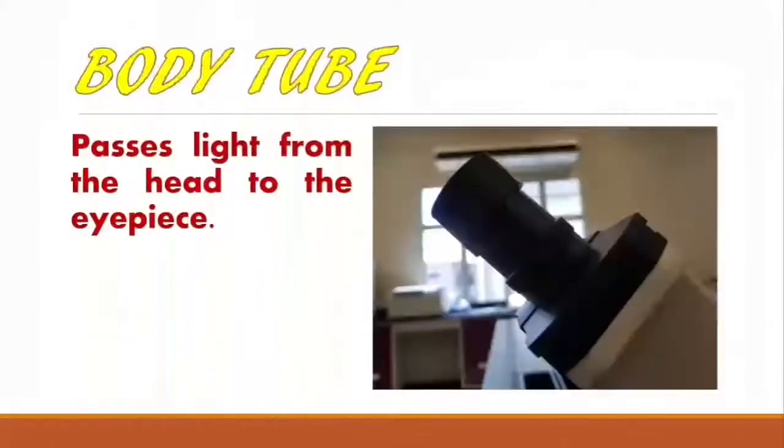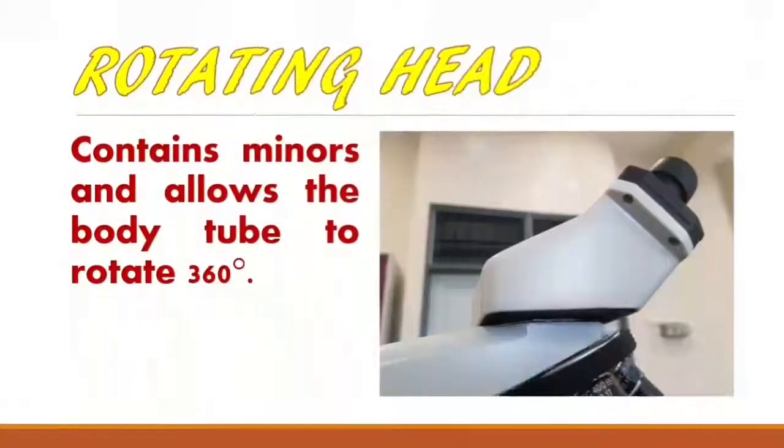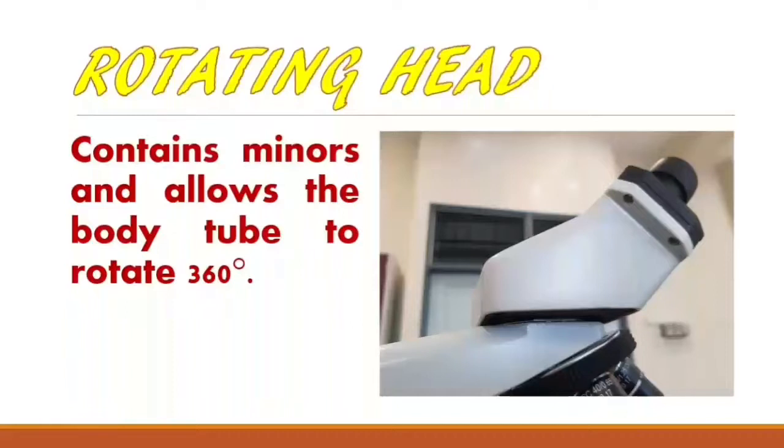The body tube passes light from the head to the eyepiece. The rotating head contains mirrors and allows the body tube to rotate 360 degrees.